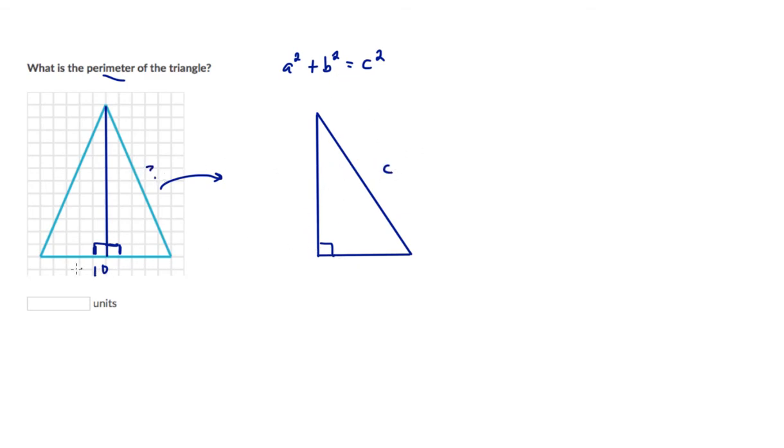I know that the base is 10, but we split this in half, so half the base would be 5. But now I can count the height of this triangle: 1, 2, 3, 4, 5, 6, 7, 8, 9, 10, 11, 12. And we have our values.